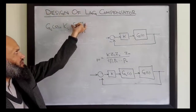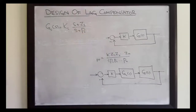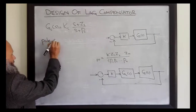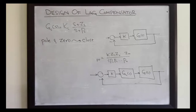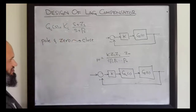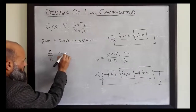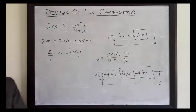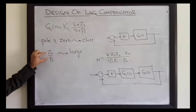There will be no angle contribution if the angle contribution due to the zero and the angle contribution due to the pole are approximately the same — that is, if the zero is close to the pole. So our requirement for no distortion in the transient characteristics is that the pole and zero should be close to each other. And if we want to improve the steady state error, the ratio Zc over Pc should be large.